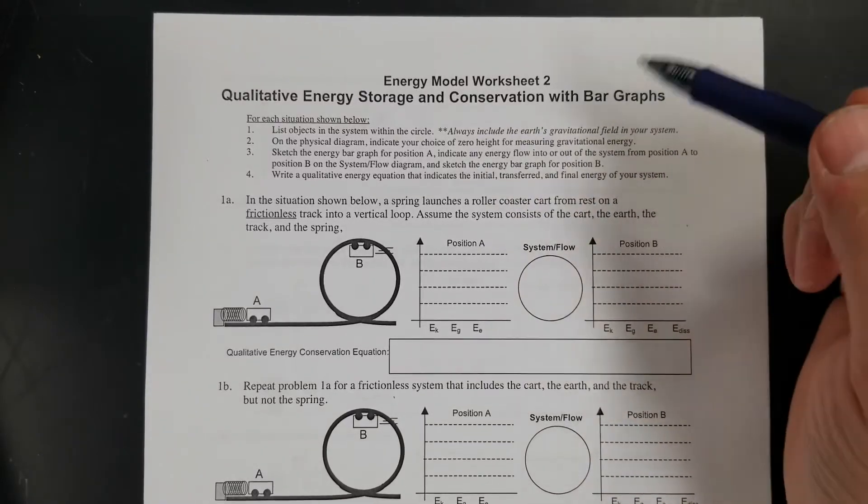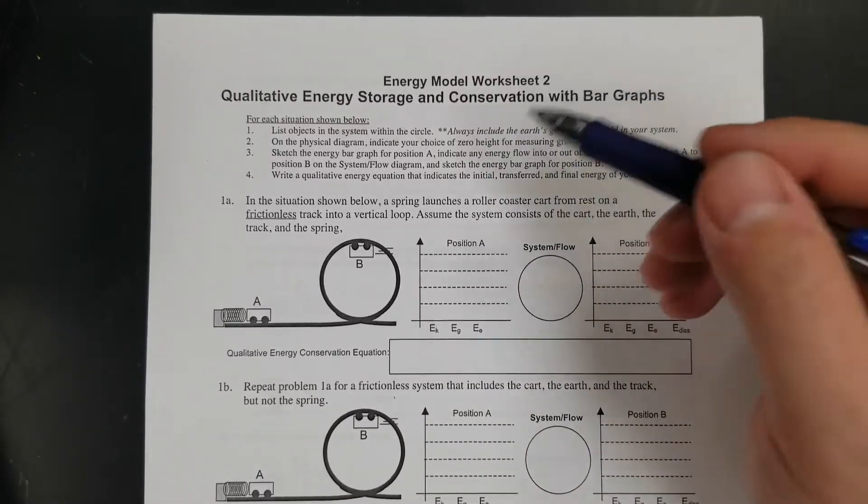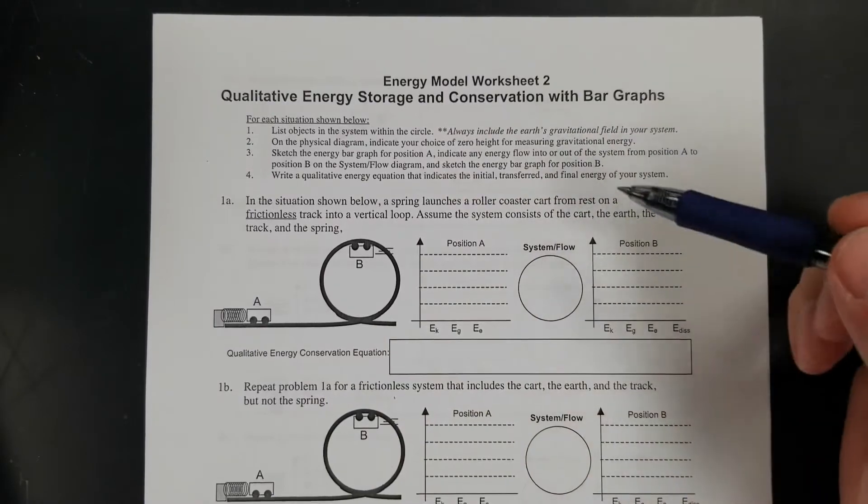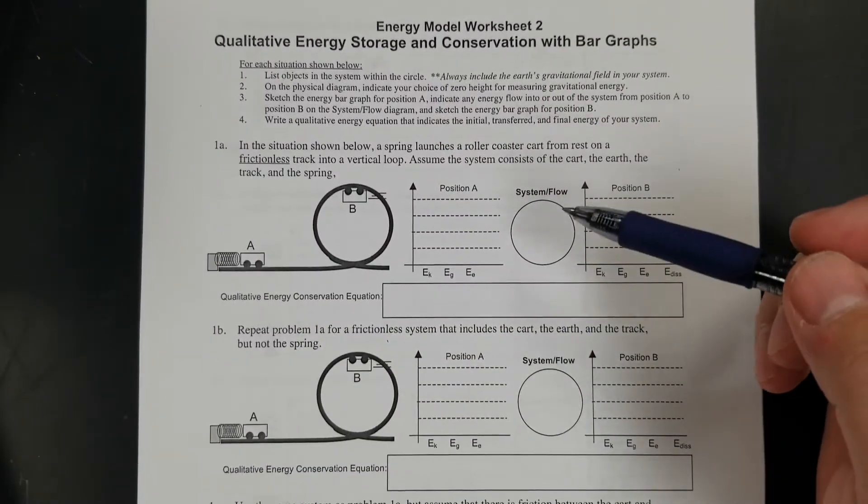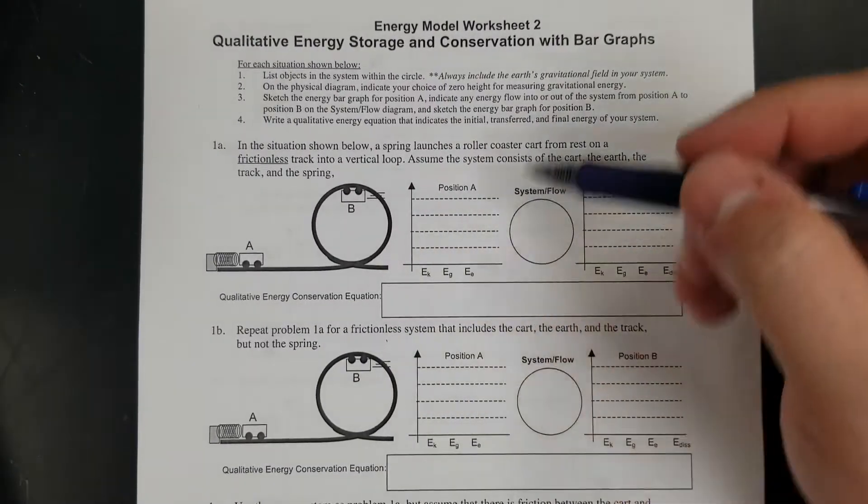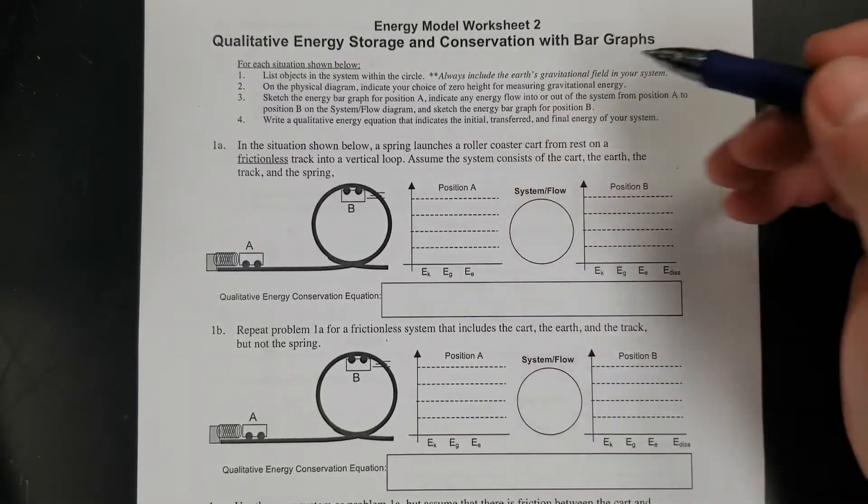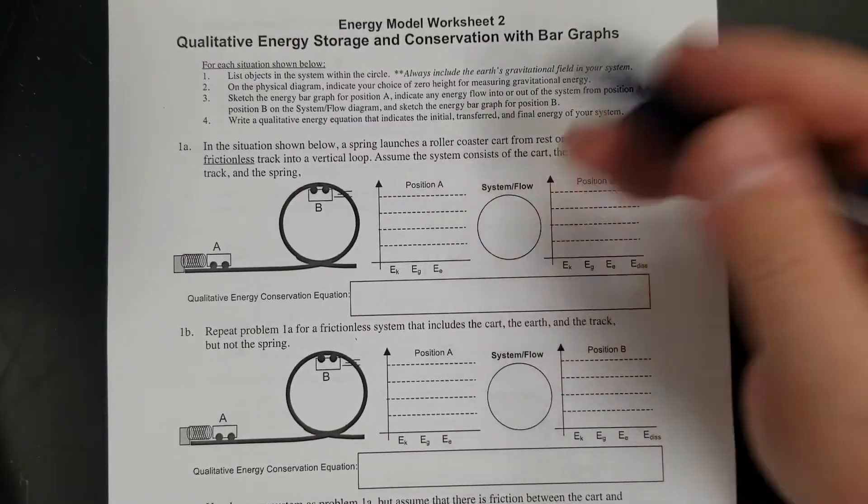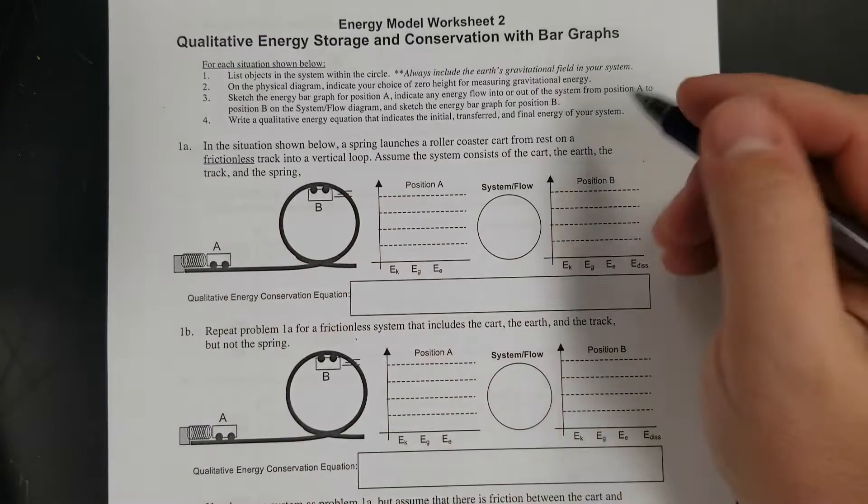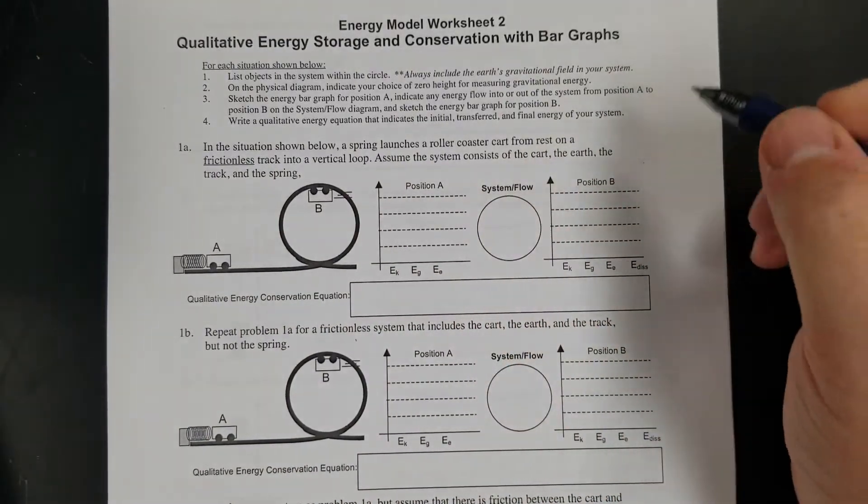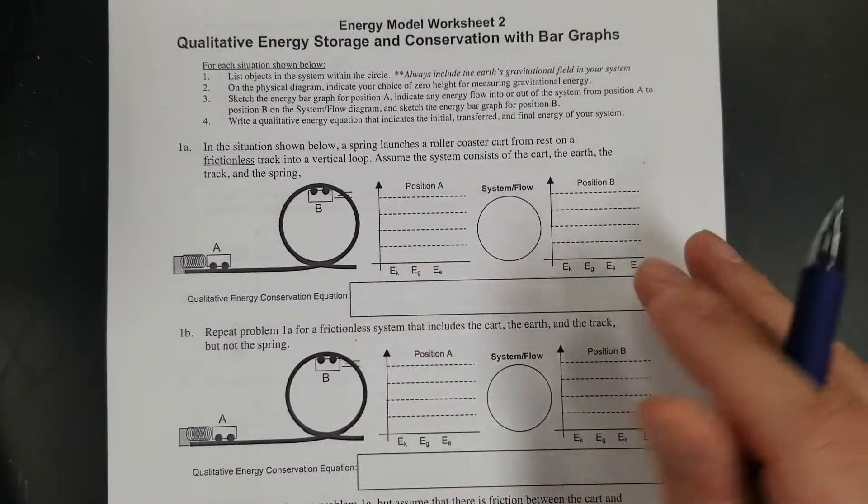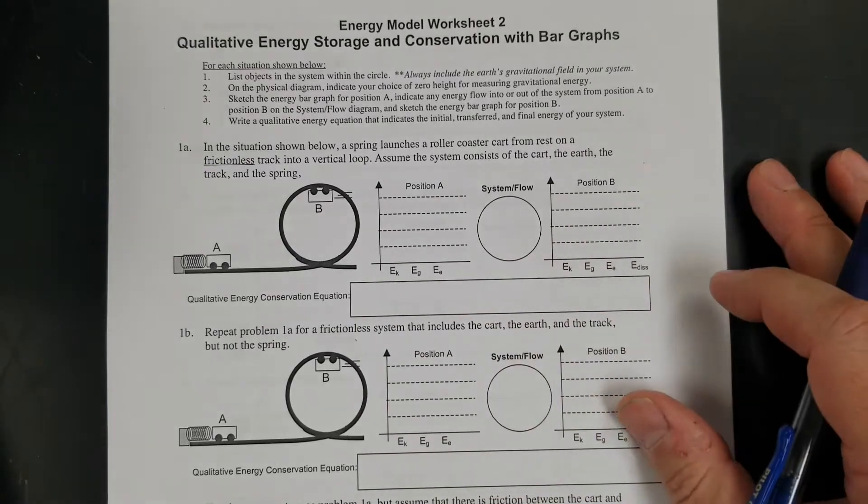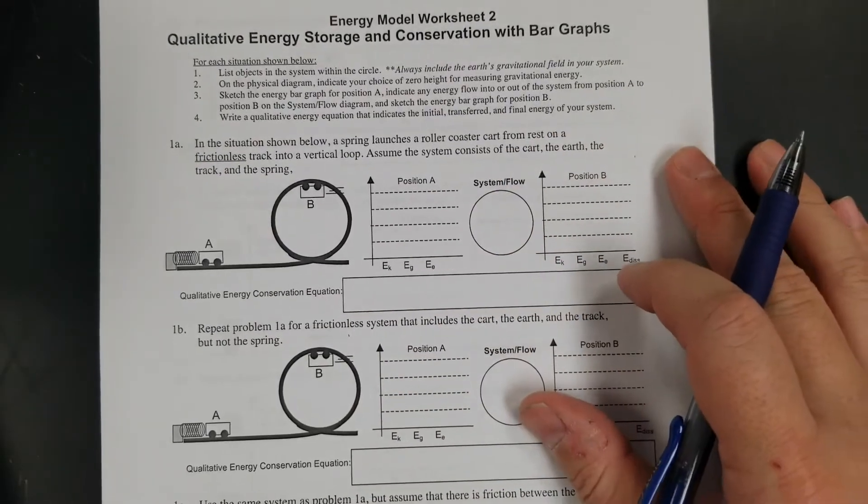Let's solve a few examples of these energy problems. What we're doing in all of these problems is practicing writing down what the system is, looking at what's coming in and out of the system, and then drawing a bar chart that shows how the energy is before and after - the different types of energy. Then you're writing an equation that you can use to solve for something. Not solving anything, just writing the equation. Let's start with number one.